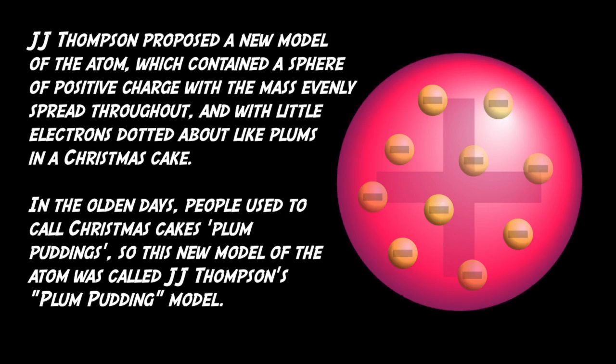J.J. Thompson proposed a new model of the atom which contained a sphere of positive charge with the mass evenly spread throughout and with little electrons dotted about like plums in a Christmas cake. In the olden days, people used to call Christmas cakes plum puddings. So this new model of the atom was called J.J. Thompson's plum pudding model.